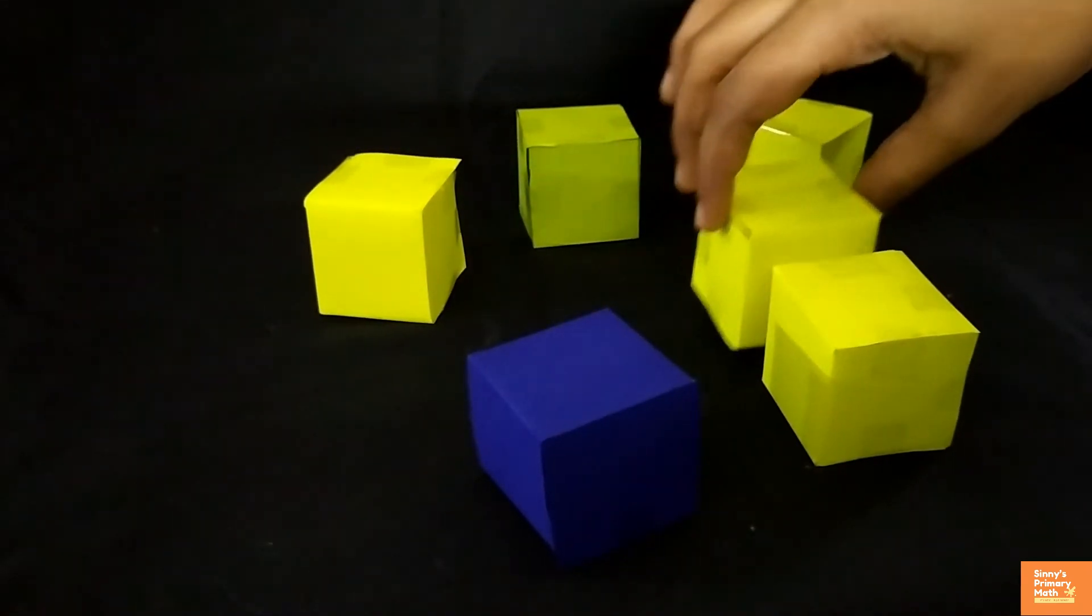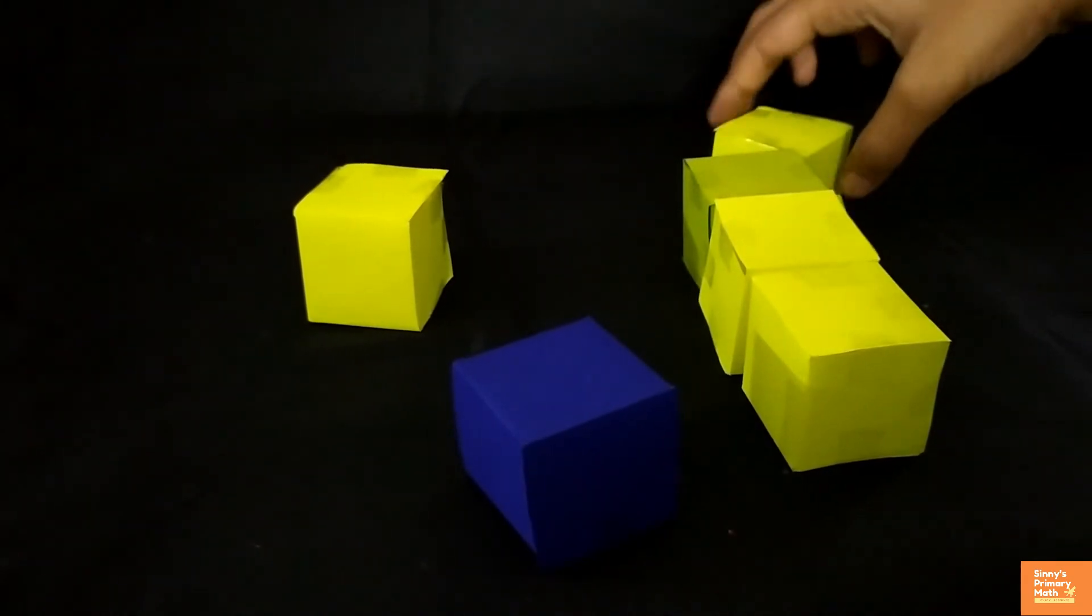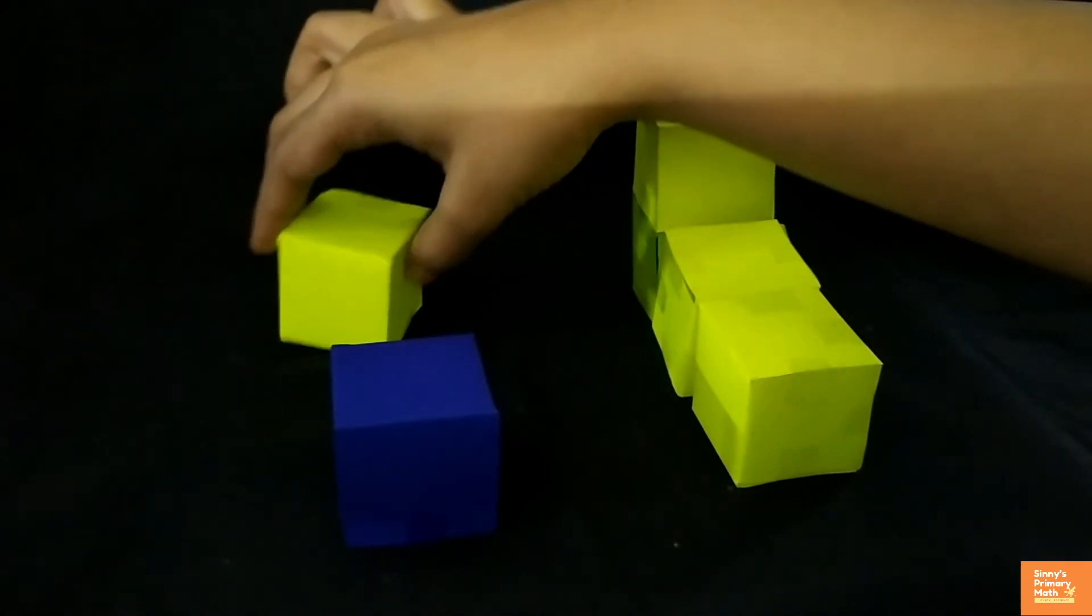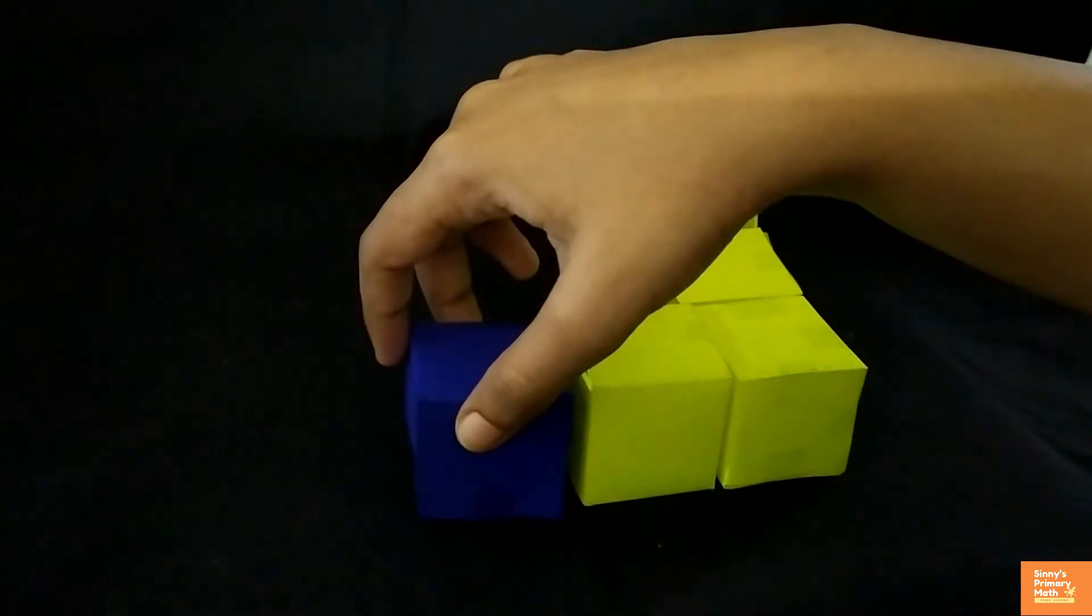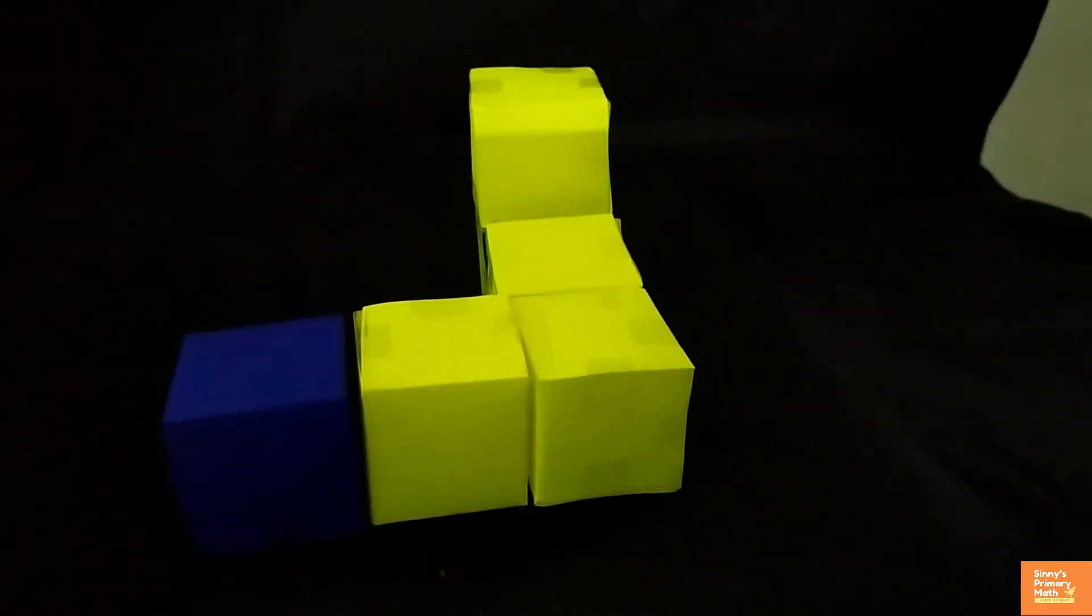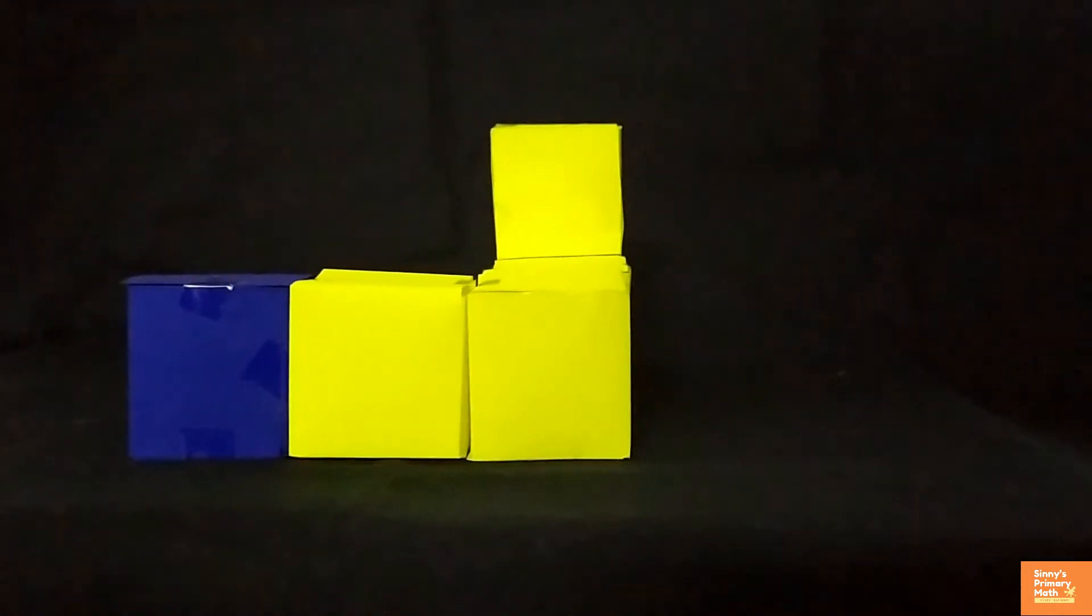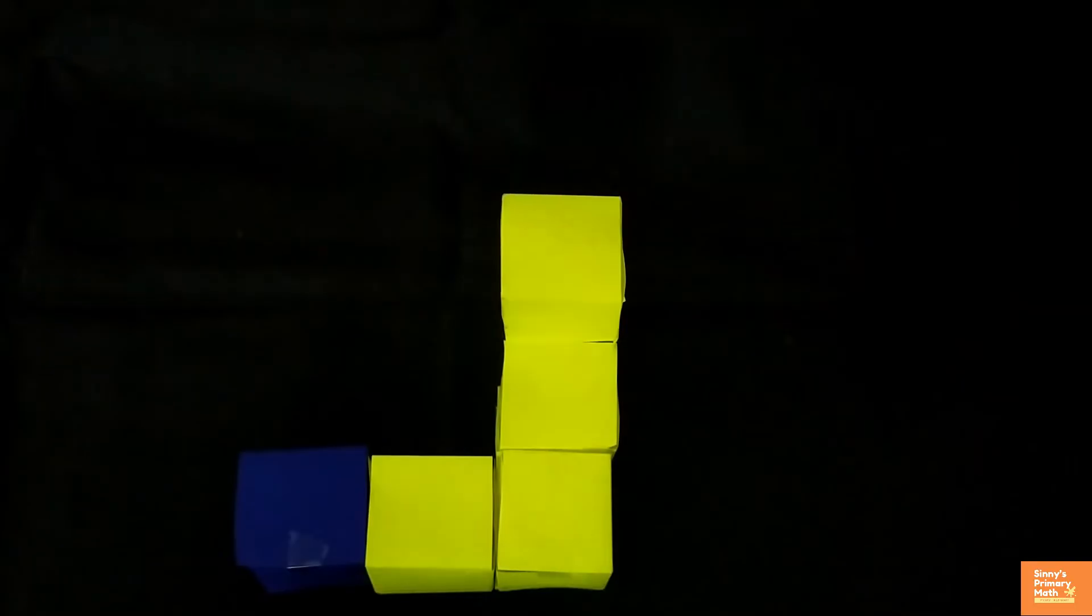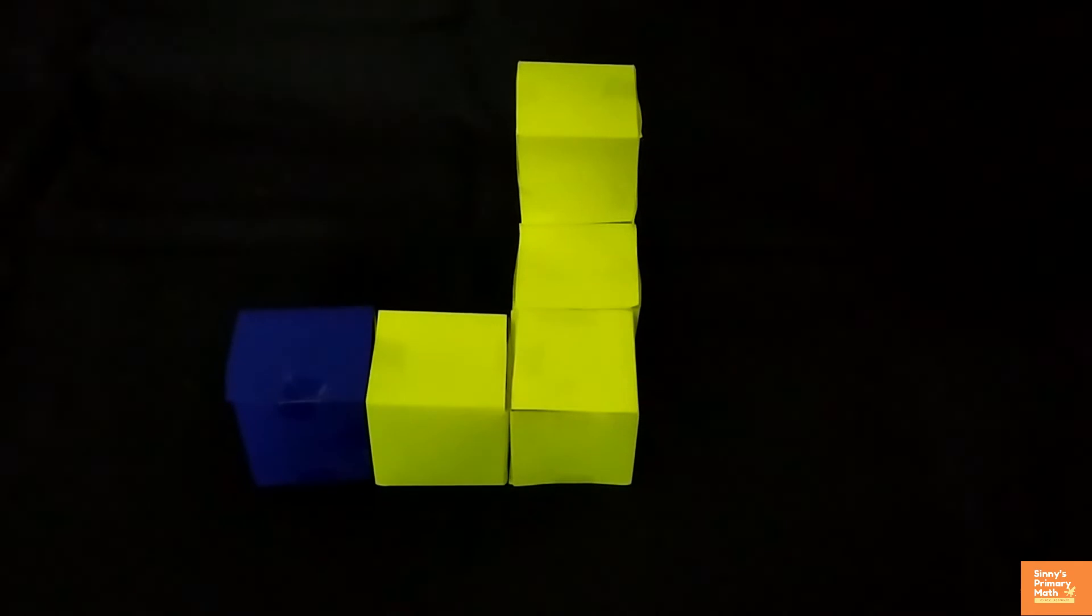Let children arrange the cubes to make different 3D shapes. Observe the shape. Each face happens to be a 2D shape that is one surface of a 3D shape.